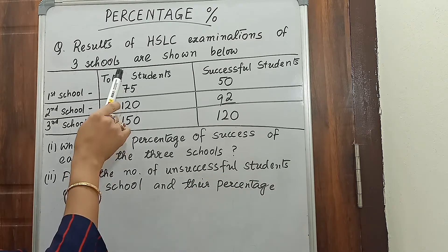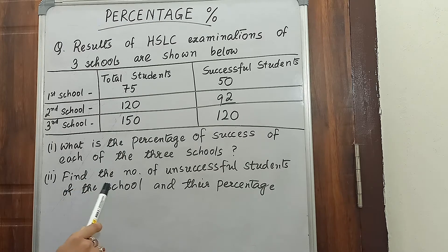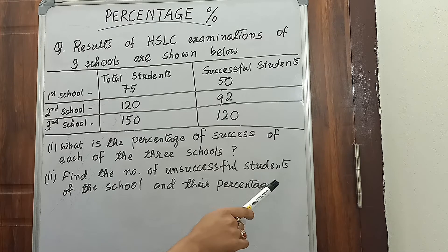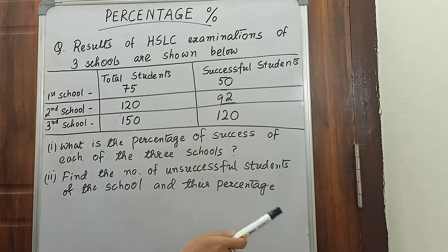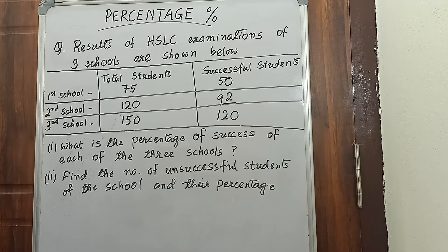First we'll find out the percentage of the three schools, and after that we'll find out the number of unsuccessful students of each school and their percentage. Afterwards we'll also find out the unsuccessful percentage of each school.